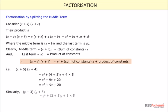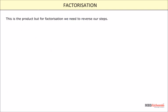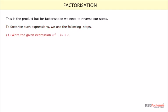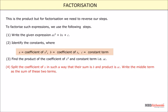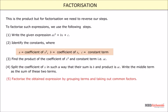Let's take the help of some examples to understand this concept. To factorize such expressions, we use the following steps: 1) Write the given expression ax square plus bx plus c. 2) Identify the constants: a is the coefficient of x square, b is the coefficient of x, and c is the constant term. 3) Find the product ac. 4) Split the coefficient of x so that their sum is b and product is ac, then write the middle term as the sum of these two terms. 5) Factorize the obtained expression by grouping terms and taking out common factors.